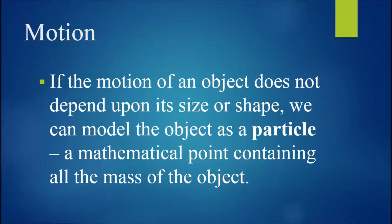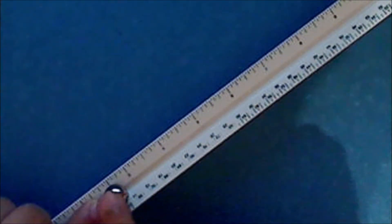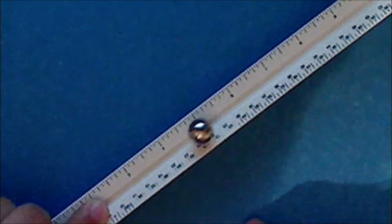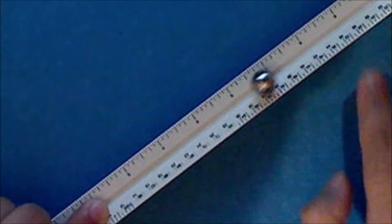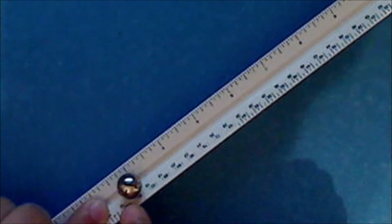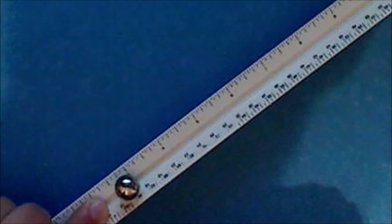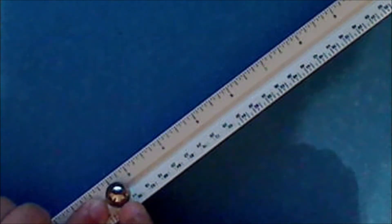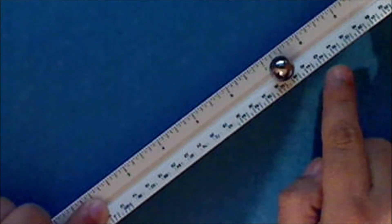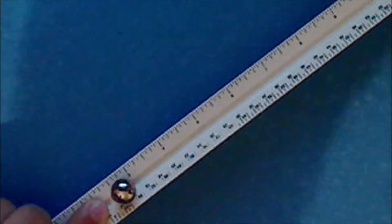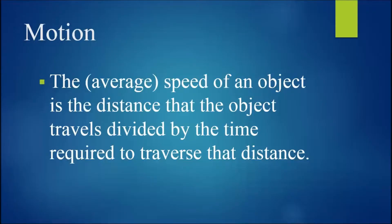If the motion of an object does not depend on its size or shape, we can model the object as a particle, which is a mathematical point containing all the mass of the object. Consider the motion of a ball that is allowed to roll along a straight line. This object has both translational motion and rotational motion, rotating about its center of mass. If we focus on the translational motion, we can treat this object as a point particle — that is, we can model it as though all its mass were located at its center of mass. One description of motion we have already considered is speed: the distance that an object travels divided by the time required to traverse that distance.